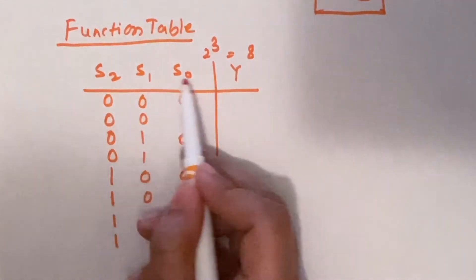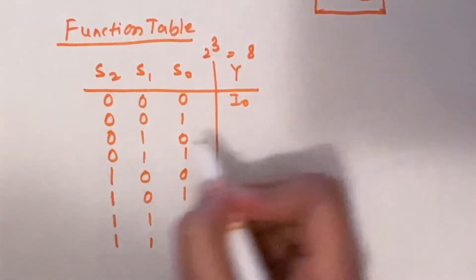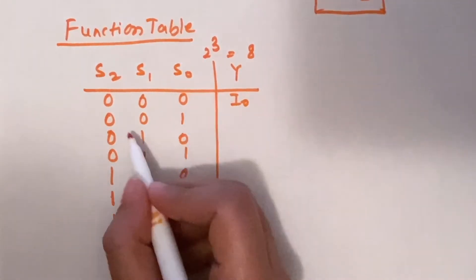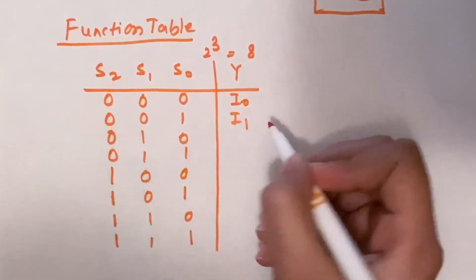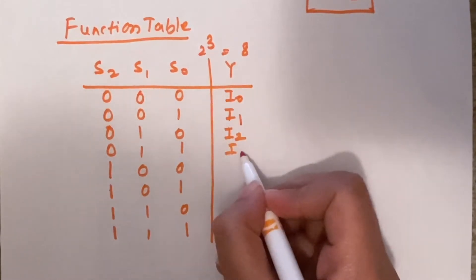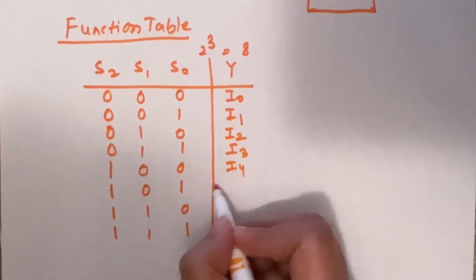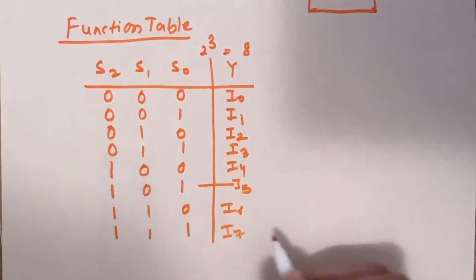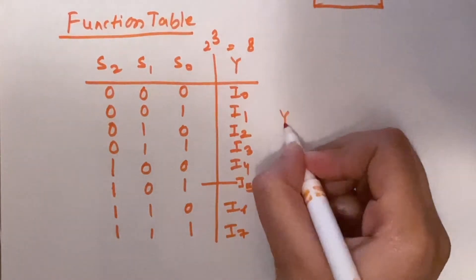When S2, S1, S0 are all 0, the output is i0. When S0 is 1 and S2 and S1 are both 0, the output is i1. Similarly we get i2, i3, i4, i5, i6, and i7. Now let's derive the expression for Y, the output of the 8-to-1 multiplexer.